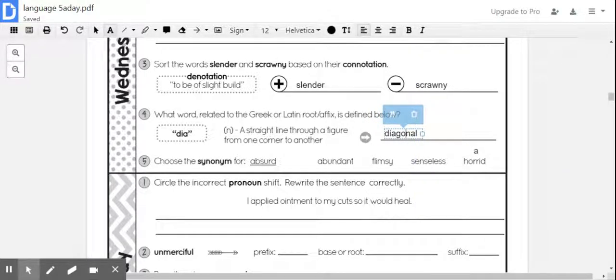Number five. Choose the synonym. So synonym means the same definition or the same meaning for absurd. Okay. So this word with a similar meaning to absurd would be senseless.